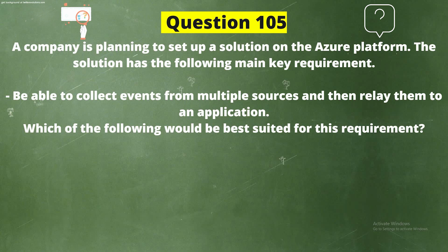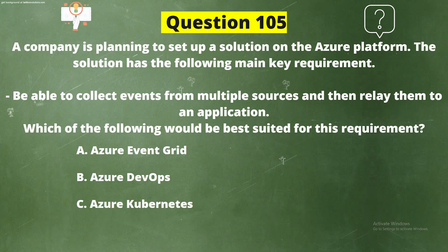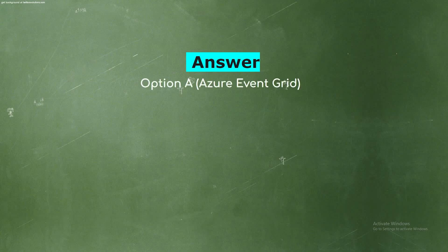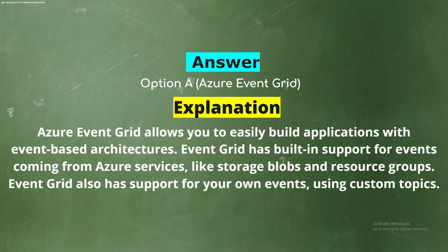Question 105. A company is planning to set up a solution on the Azure platform. The key requirement is to collect events from multiple sources and relay them to an application. The correct answer is Option A: Azure Event Grid. Azure Event Grid allows you to easily build applications with event-based architectures. It has built-in support for events from Azure services like storage blobs and resource groups, and also supports custom topics.